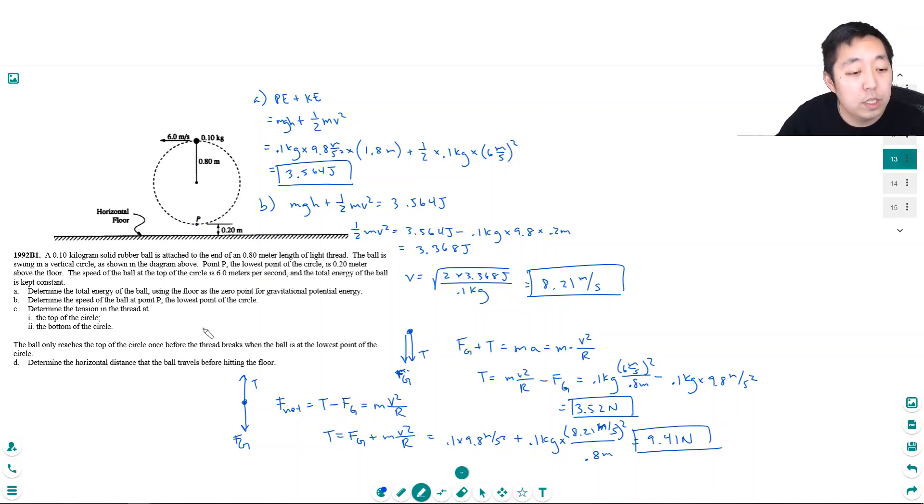The ball only reaches the top of the circle once before the thread breaks when the ball is at the lowest point of the circle. Determine the horizontal distance the ball travels before hitting the floor. Okay so we know its velocity right when it snaps right here its velocity going this way is 8.21 meters per second. We'll call that v. And its distance it travels in the x direction would be velocity times time because when you do projectile motion there's no horizontal force or acceleration, we're assuming ignoring air resistance.